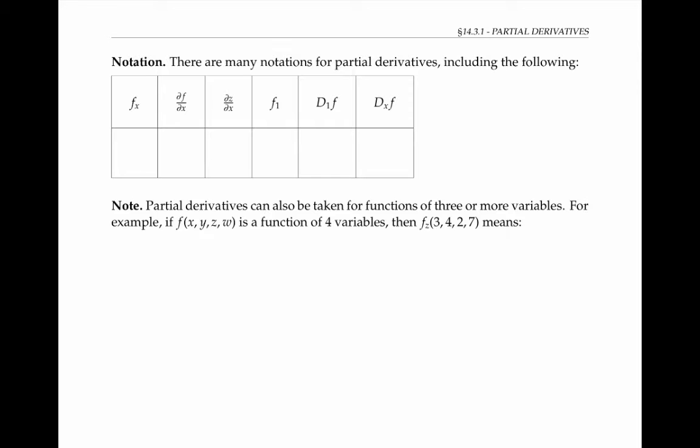You'll find that there are many different notations for partial derivatives, including the one that we used. So we can write this partial symbol with the curly d's. We can also talk about if z equals f of xy, then we sometimes talk about partial z partial x. We can also write f with a subscript of one to denote the fact that we're taking the derivative in the direction of the first variable x, or capital D sub one, or capital D sub f. Of course, there are other corresponding notations for taking derivatives in the y direction.